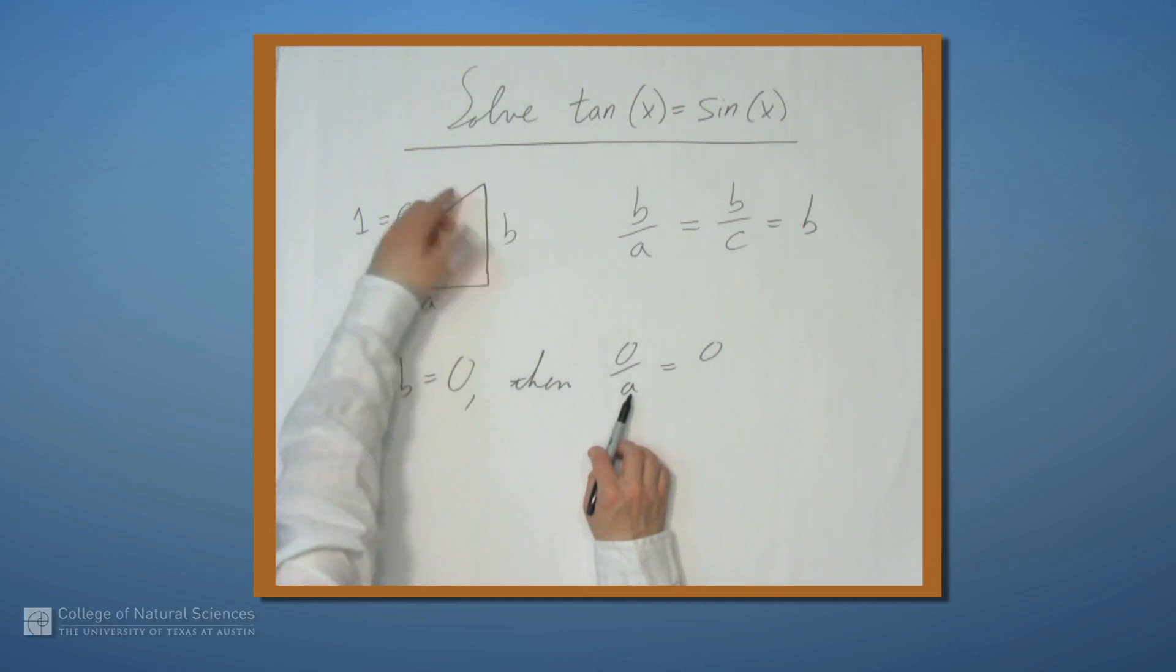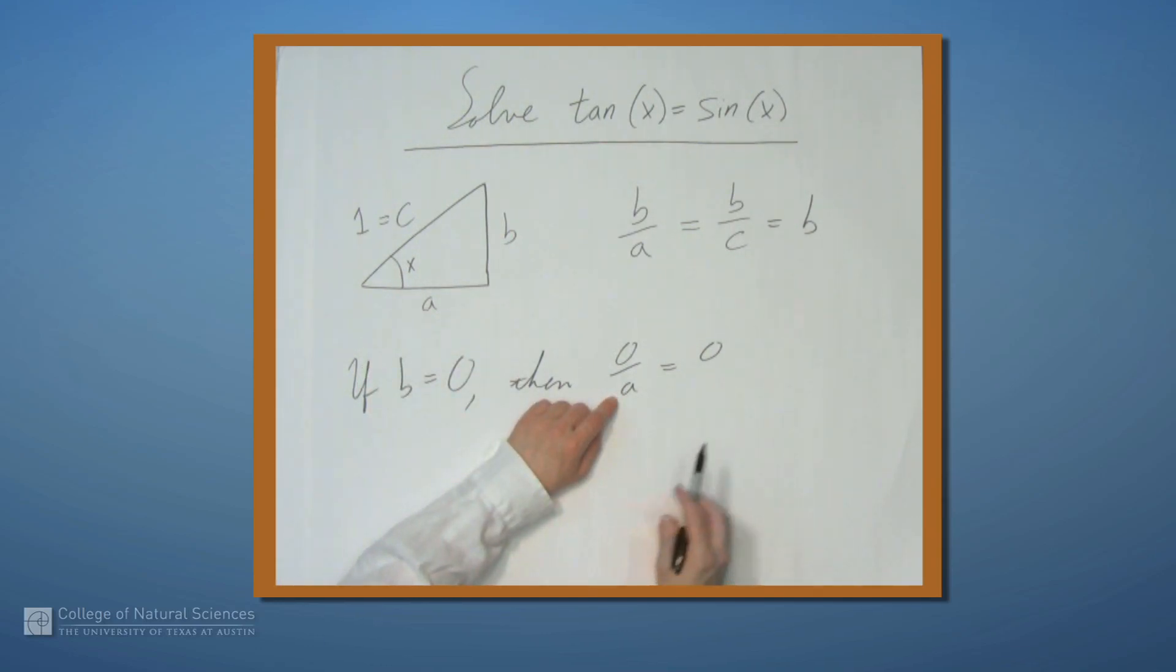Now if b is zero, that means that this triangle isn't even a triangle, it's just a line. And so a and c are actually going to match up, so a will be 1. So we don't have to worry about a being 0. So 0 over a equals 0 is going to be true.